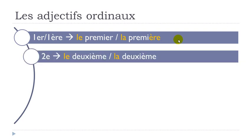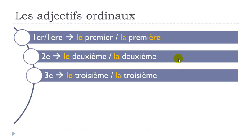Then le deuxième, la deuxième. In that case it's only the le and la that will be different, because deuxième will be the same for both. Then same thing here: le troisième, la troisième.